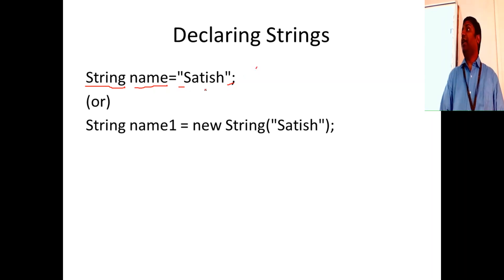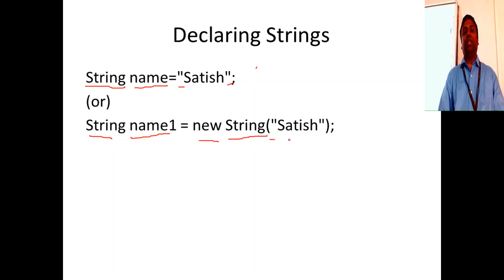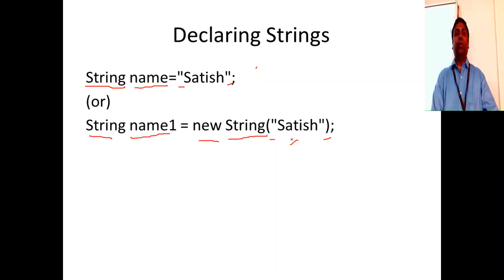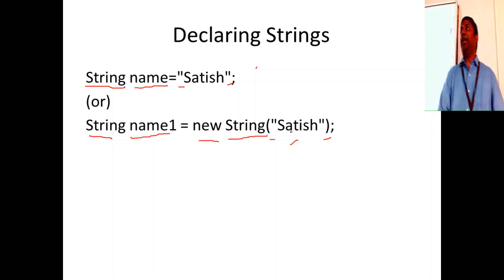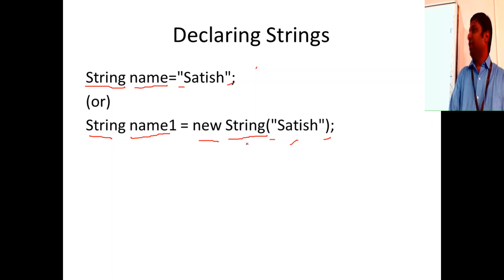There is one more way of declaring a string: you give the String class name, use the new operator, then the String class name again, and within parentheses you pass the value. So there are two methods of declaring a string, and we need to understand the difference between them.